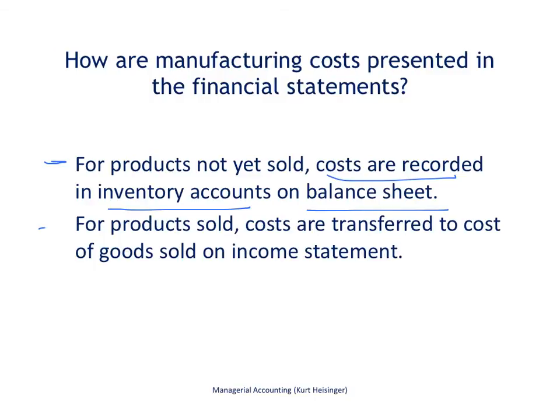Once products are sold, the product costs associated with those products — direct materials, direct labor, and manufacturing overhead — are transferred from the inventory accounts into cost of goods sold, which appears on the income statement. So product costs sit as assets on the balance sheet until the goods are sold, at which point they become an expense.